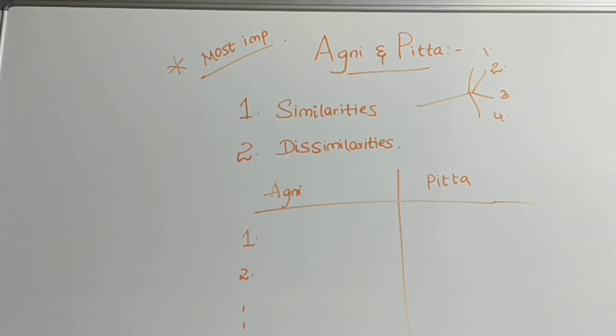This is the most controversial topic actually. You all may go through while reading the doshas, you will see there will be some similarities between pitta and agni. At that time only, the question may arise to you, is this agni and pitta, whether they are same? If so, why there will be two names, agni and pitta? It is enough if it is given for one name only. Why agni is not considered as dosha? Like this, many questions will arise in your mind.